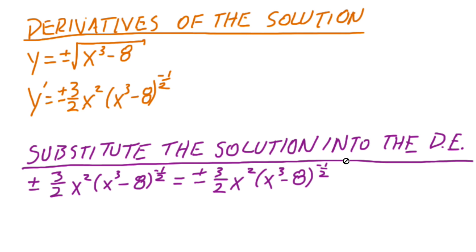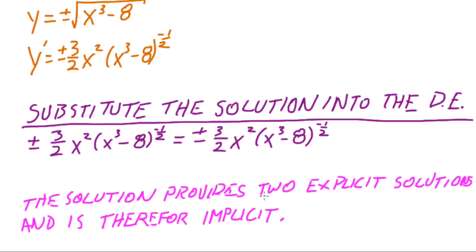We substitute the solution into the differential equation, and you can see that they're equal. I changed the form of this just a little, but if you do a little algebra, you'll see that this is exactly the same as above. So, the solution provides two explicit solutions and is therefore implicit.